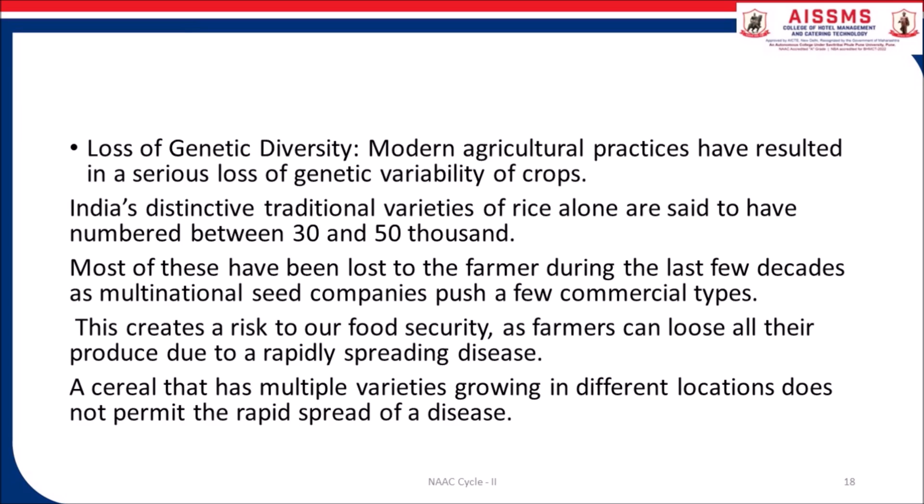Loss of genetic diversity — modern agriculture practices have resulted in serious loss of genetic variability of crops. India's distinct traditional variety of rice alone is said to number between 30,000 to 50,000. Most of these have been lost to farmers during the last few decades, as seed companies push a few commercial types. This creates a risk to food security as farmers can lose all produce due to rapidly spreading disease. A cereal with multiple varieties growing in different locations does not permit the rapid spread of disease.